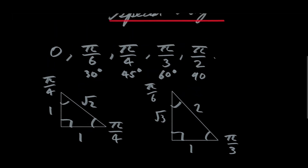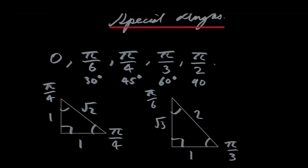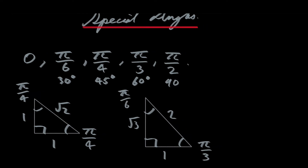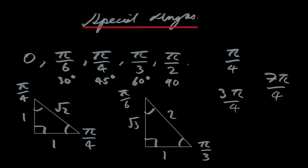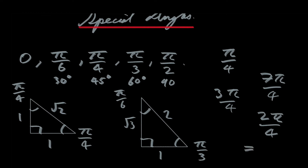Once you can calculate the sine and cosine of these special angles, you can actually calculate the sine and cosine of any integer multiple of them. For instance, if you can calculate the sine and the cosine of pi over four, then you can also calculate the sine and the cosine of three pi over four, seven pi over four, and so on. Two pi over four just equals pi over two, which is already one of the special angles.